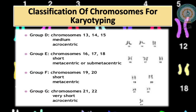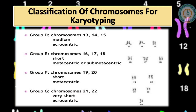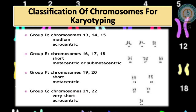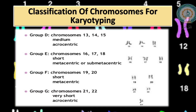Group F consists of chromosomes 19 and 20, which are short and metacentric. Group G consists of chromosomes 21 and 22, which are very short and acrocentric. All these groups are classified for the purpose of identifying chromosomes in karyotyping.